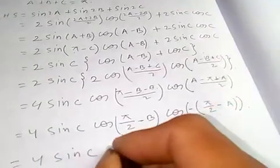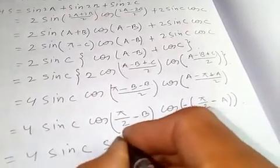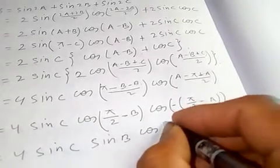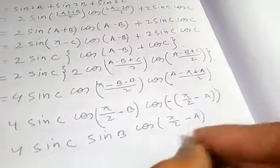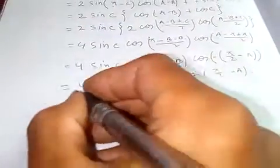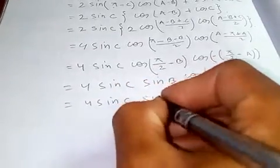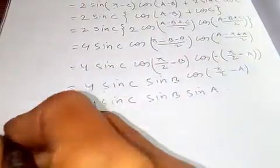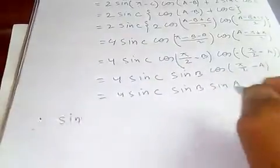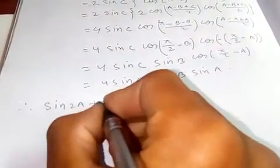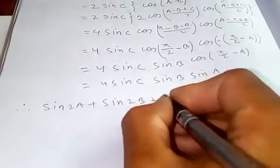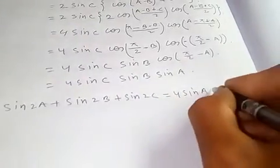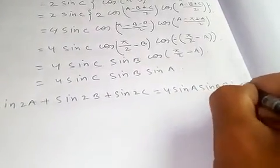We know cos(90° − x) = sin(x) for any angle, and cos(−x) = cos(x). So this simplifies to 4·sin(C)·sin(B)·sin(A). Therefore, we can say that sin(2A) + sin(2B) + sin(2C) = 4·sin(A)·sin(B)·sin(C). This completes the proof.